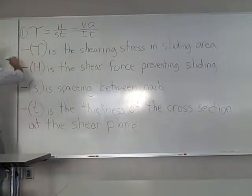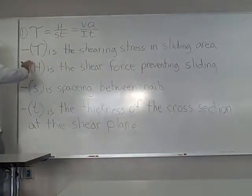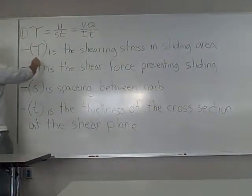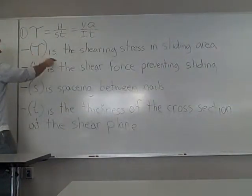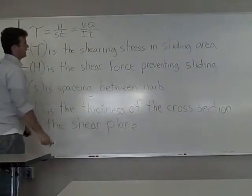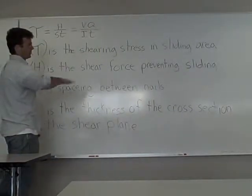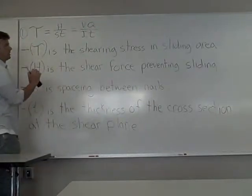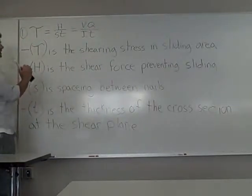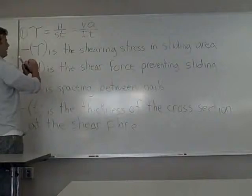So, first we have our shear stress. Our tau is the shearing stress in the sliding area. And you'll recall that the sliding area is the horizontal surface. If it's a deck of cards, it's basically the cards sliding against each other as you bend the deck.